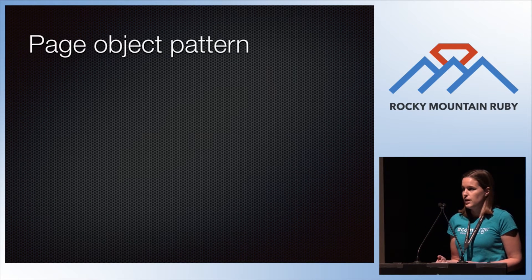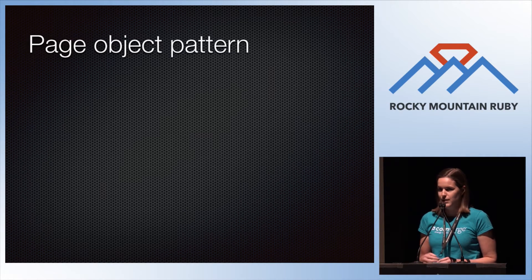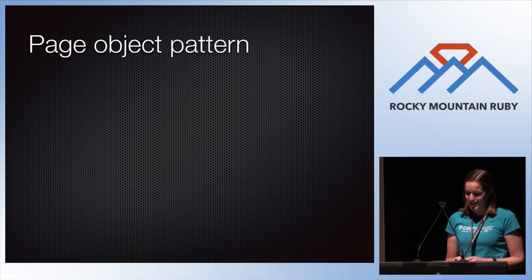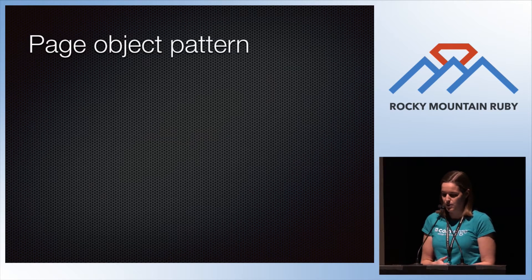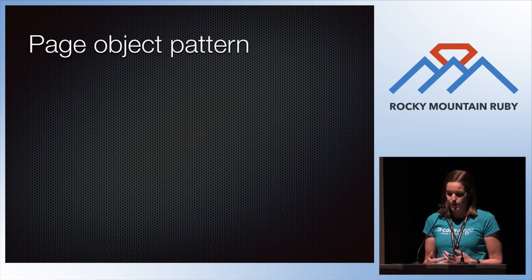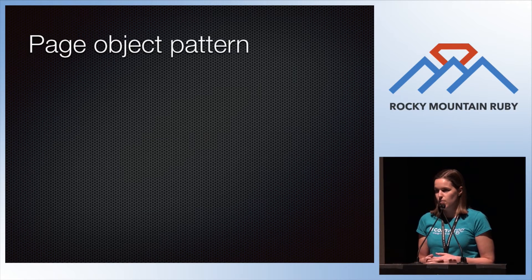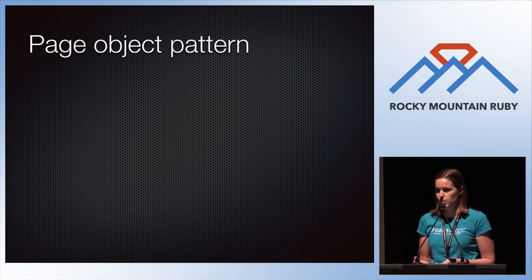One remedy for this repetition in your test code is the page object pattern. Martin Fowler has a good blog post on this. The idea is that you can define a class for each page and use it to store the logic for how to interact with the page. It's easy to reuse those methods any time you have to interact with that page, and if there's any change to the interface, you only have to update it in one page object instead of many tests. You can also optimize slow tests more easily this way.